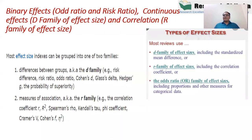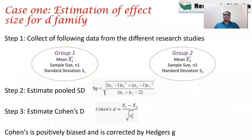In marketing research many experiments also calculate the risk ratio and odds ratio — they are important in experimental design. So we are going to discuss these now. Up to now I told you briefly what family we are working with and how effect size differs from p-value. Now we are going into technical details. The first family I will consider is the d family.